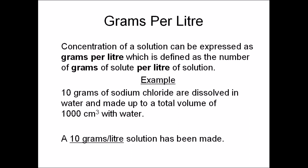Grams per litre is another way of expressing concentration. It's basically the number of grams of solute per one litre of solution. If you multiply a value of grams per litre by 1,000, it gets converted to milligrams per litre, which is parts per million.